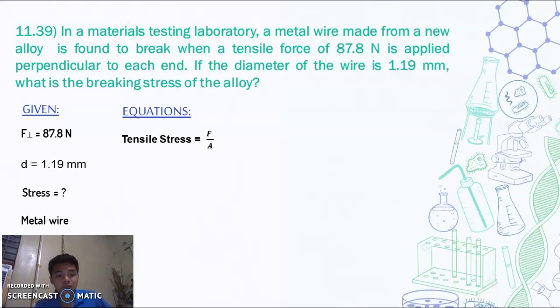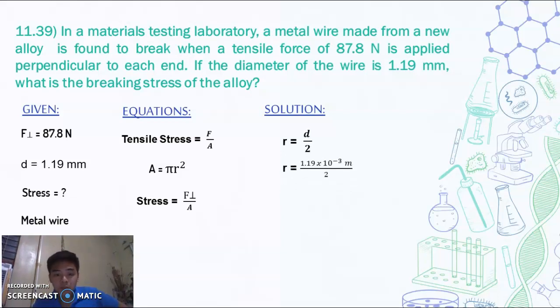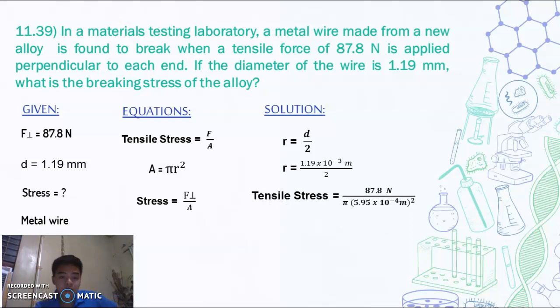For our tensile stress equals the perpendicular force all over area. And since it was given that metal wire, so it's circular, our area is pi r squared. So we can substitute that. Our radius equals d over 2. So for the stress, 87.8 Newton all over pi times our radius, which is 5.95 times 10 to the negative 4 meter squared, which will give us a value of 78.9 times 10 to the 6 Pascal. This is now our breaking stress.